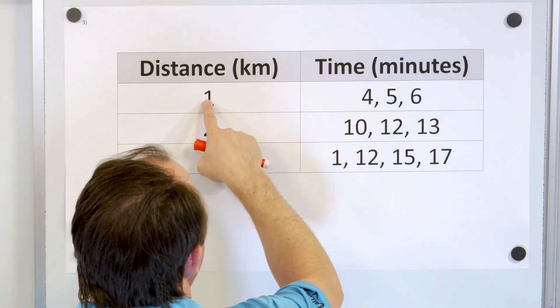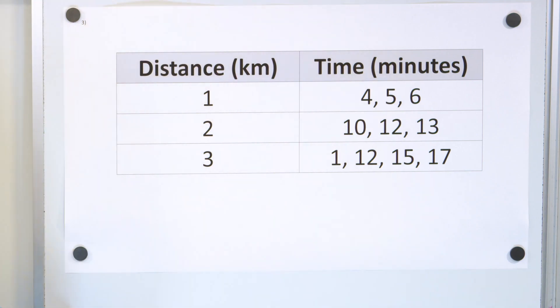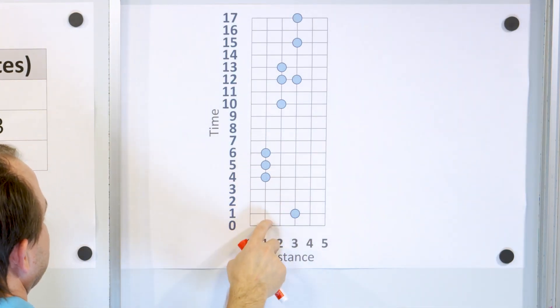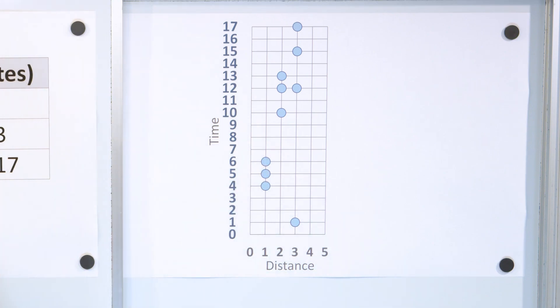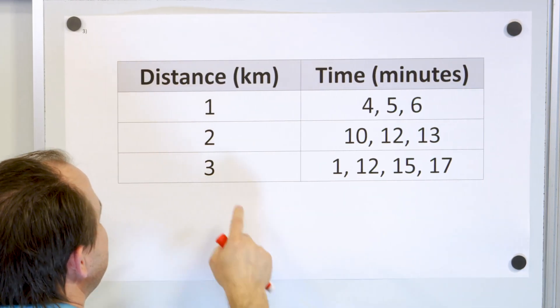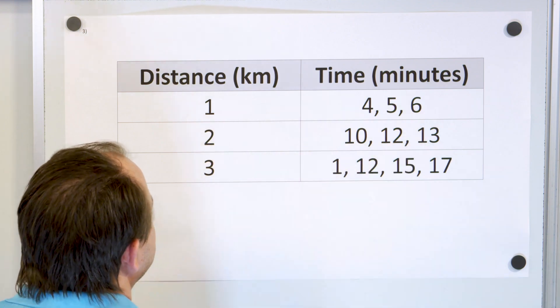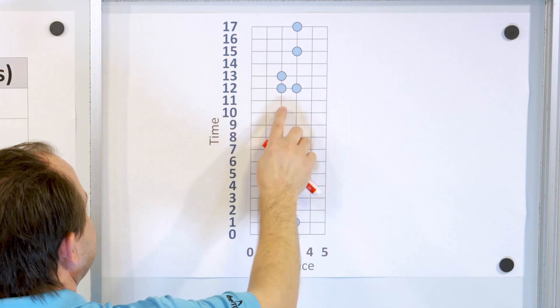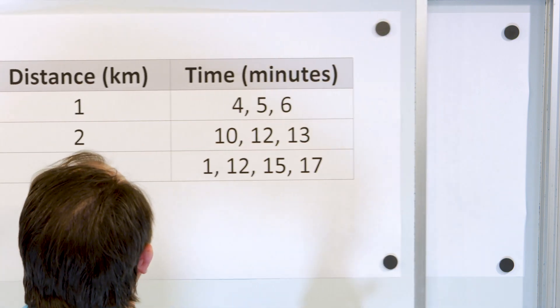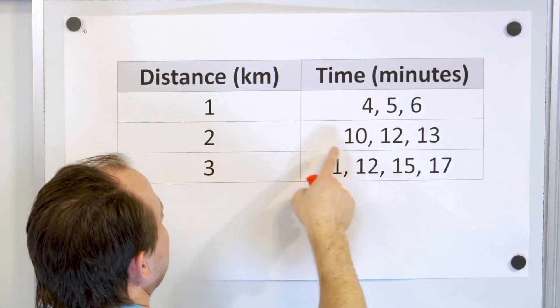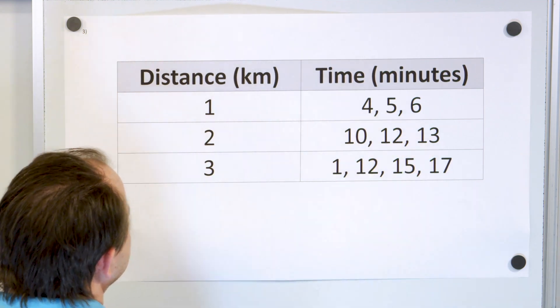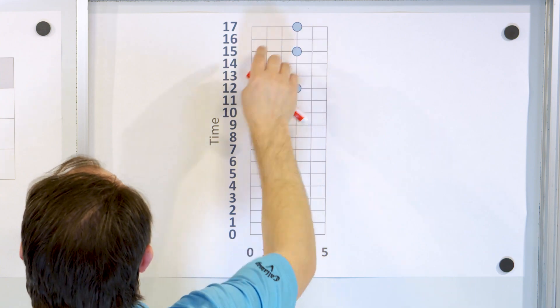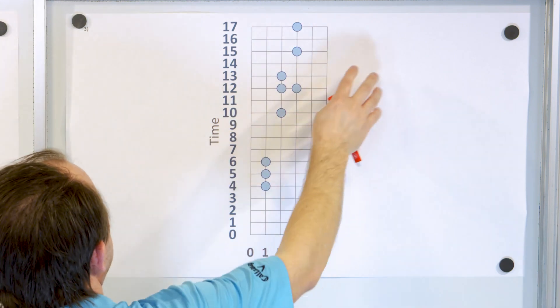So we have 1,4, 1,5, 1,6. So we have one kilometer distance, four, five, six minutes. Then we have 2,10, 2,12, 2,13. So 2,10, 2,12, 2,13, that's the group right there. And then we have 3,1, 3,12, 3,15, 3,17. So we have 3,1, 3,12, 3,15, 3,17.